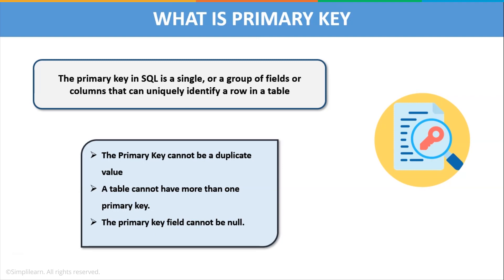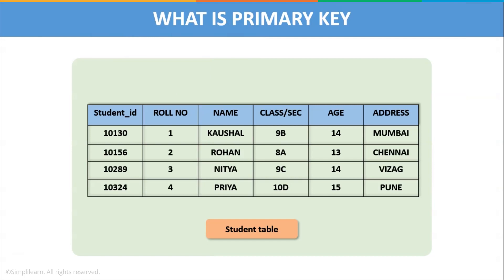The properties of a SQL primary key are: it enforces uniqueness by not accepting any duplicate values, a table can take only one primary key, and a primary key column cannot accept null values. Consider a student table with fields such as student ID, role number, name, class, section, age, and address. Student ID can be taken as a primary key here. You can also take the role number, but since we are taking records of all students in a school, we take student ID as the primary key. If you take records of students for a particular class, then role number can be taken as the primary key as well.